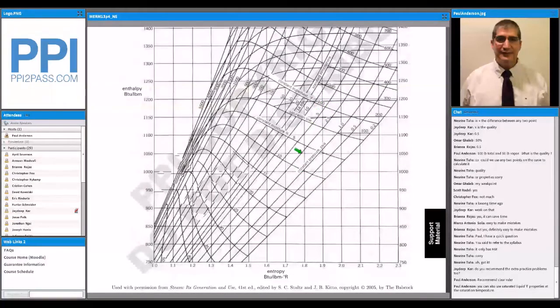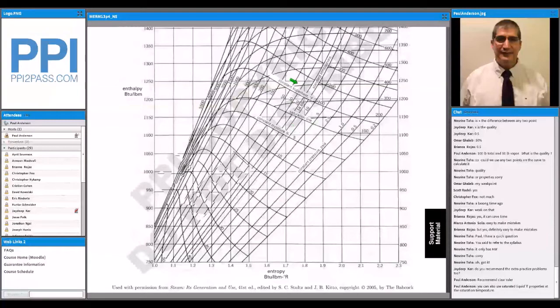It is kind of handy for constant entropy processes. You just kind of slide up and down a vertical line. But if you're not familiar with this Mollier diagram, my advice would be to focus on the steam tables.